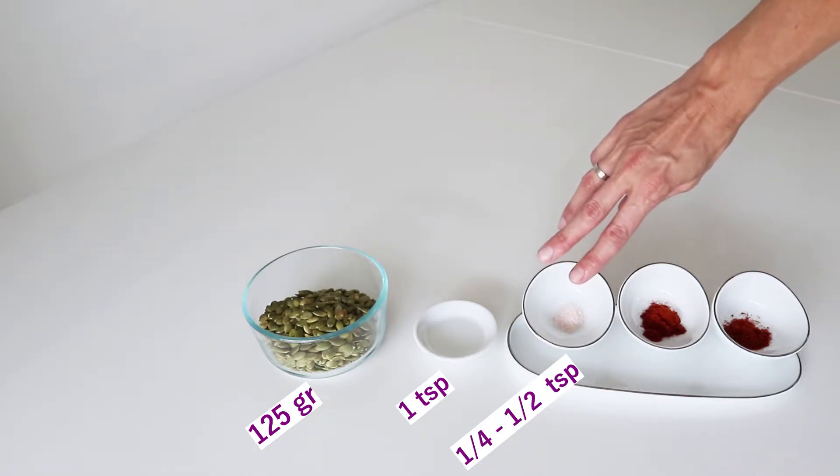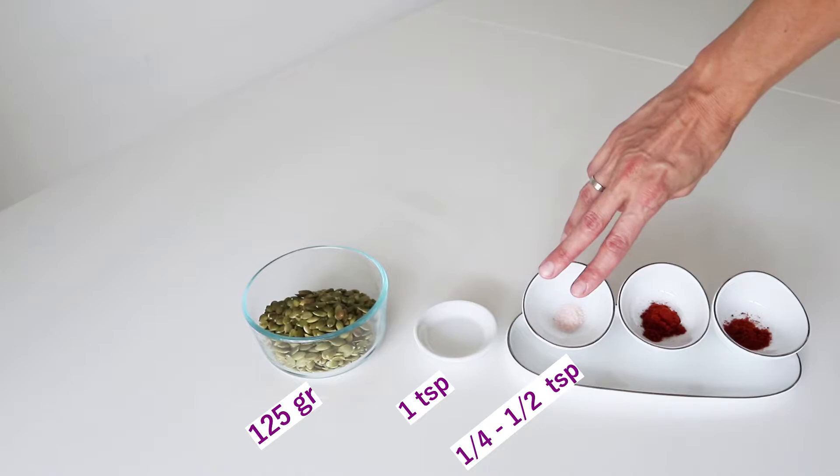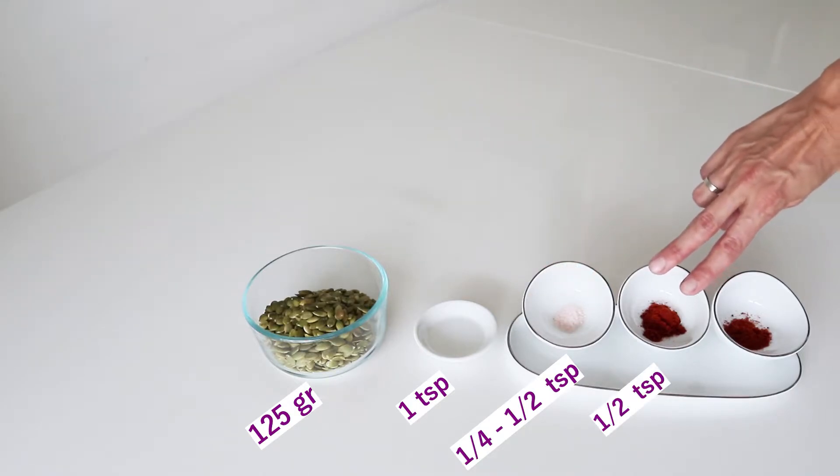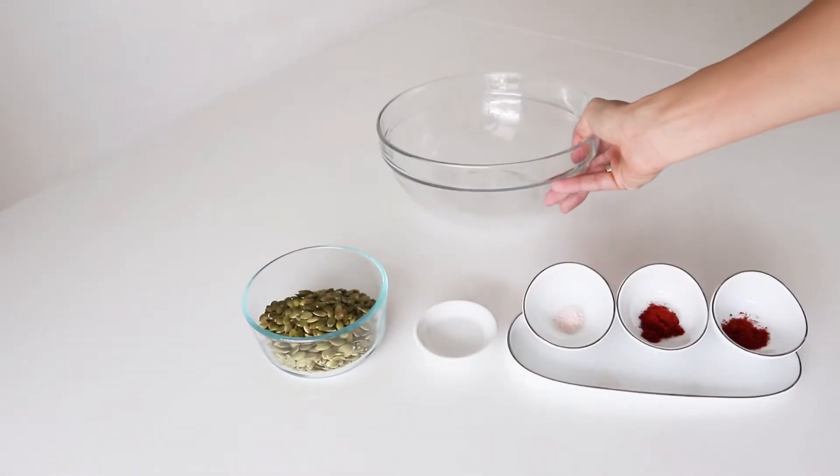Now it all depends on how salty you want it. If you want it very salty, like popcorn in the cinema, you'll opt for half a teaspoon. If you don't want it too salty, then just add one quarter teaspoon. Then we've got half a teaspoon sweet or smoked paprika and one quarter teaspoon cayenne pepper. If you don't like it too spicy, you can skip cayenne pepper, reduce the amount, or swap it for sweet or smoked paprika.